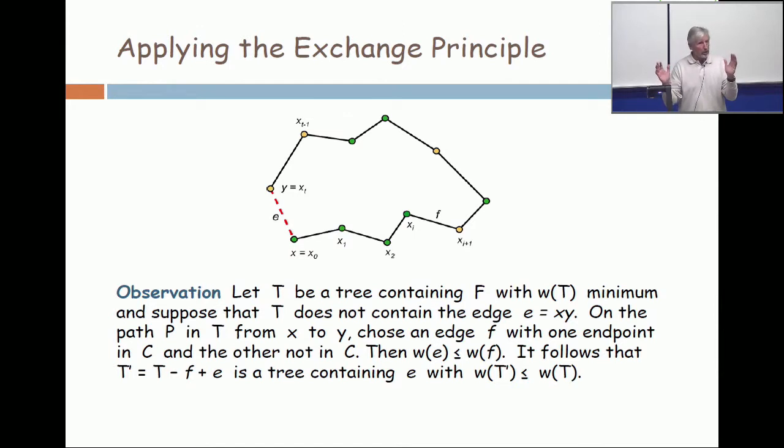Or it might be better, but it's just as good. So remember, when you have duplication among weights, you can have many spanning trees which have optimum weight. Just a special case, suppose all edges have weight one. If all edges have weight one, then any spanning tree is optimum.